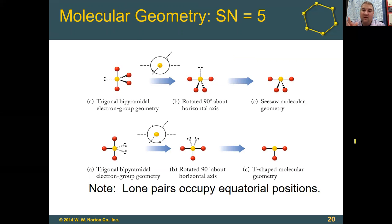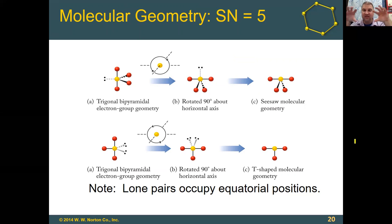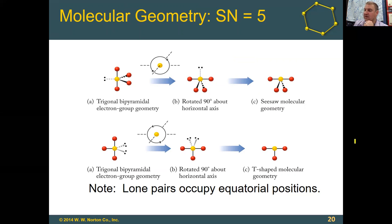If we go to three lone pairs with steric number five, that third lone pair still goes into an equatorial position. With all lone pairs in equatorial positions, the three remaining atoms form a straight line. The equatorial lone pairs repel those axial atoms equally, so those axial atoms are at a perfectly 180 degrees.